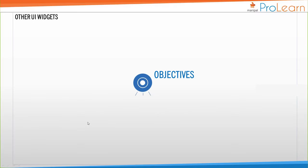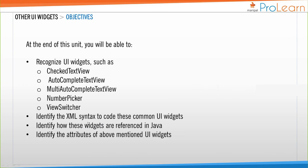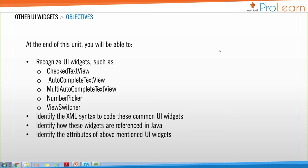In today's session, the first UI widget we are going to see is the CheckedTextView. A TextView is used to display text, similar to a label control in HTML or other programming languages. A CheckedTextView is a combination of a TextView and a checkbox control, meaning it is a TextView that can be checked and unchecked.